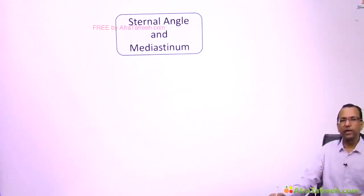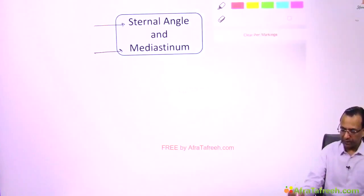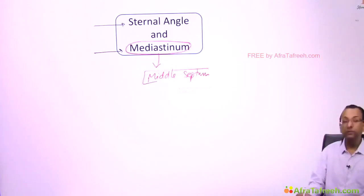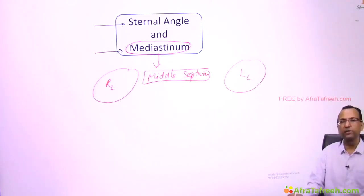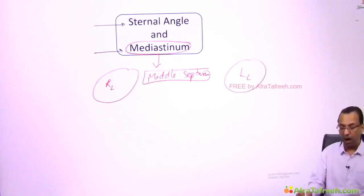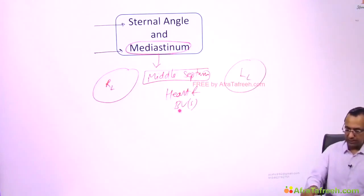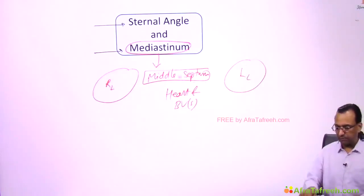We are moving on to the next topic: the sternal angle and the mediastinum. What is the mediastinum? The mediastinum is actually the middle septum — the septum separating the right lung and the left lung. So between the right lung and left lung, you have a middle septum called the mediastinum.